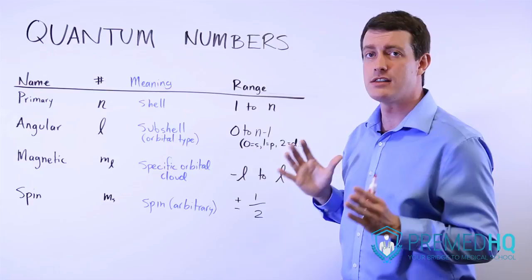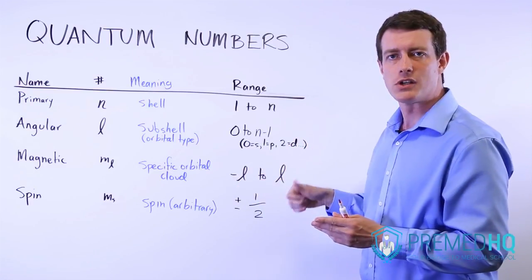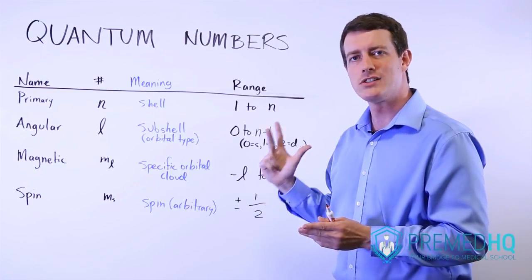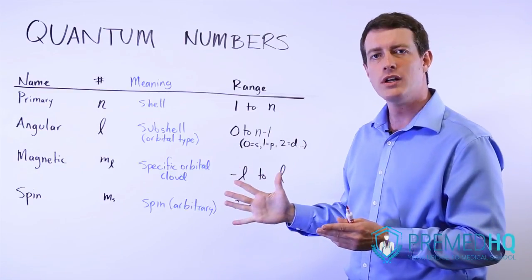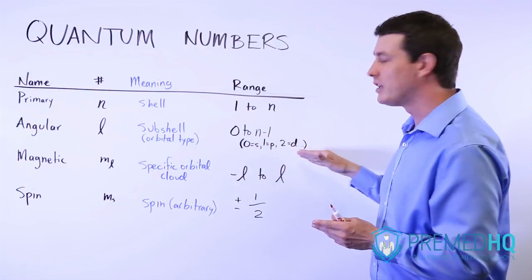Notice that when you get to the d orbitals, then you have values from negative 2 to positive 2. So it's negative 2, negative 1, 0, 1, or 2. And that just happens to be the 5 clouds that are contained within the d orbital.